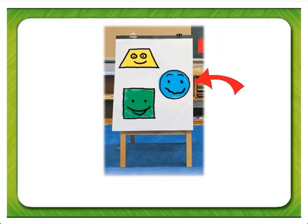It's a trapezoid. The blue shape on Ella's easel is round. What is the name of this shape? Did you say circle? If you did, you're correct.